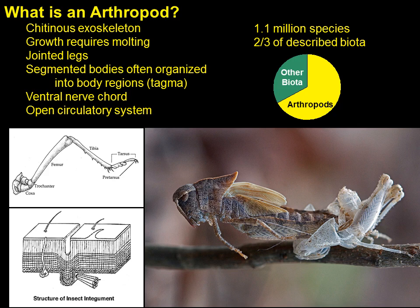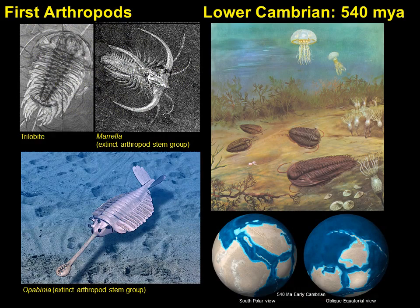The term arthropod refers to their jointed legs. Arthropods generally have their bodies organized into major regions, or tagma. Arthropods comprise about two-thirds of described biodiversity, and about 11,000 new species are being described every year.